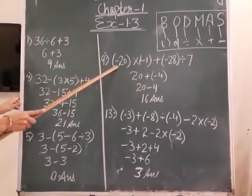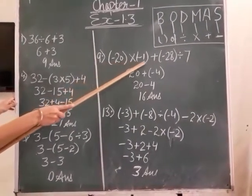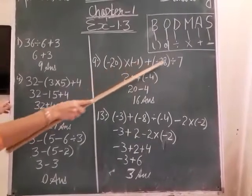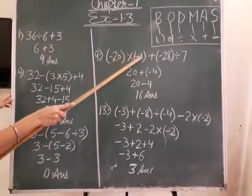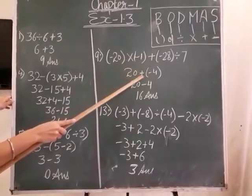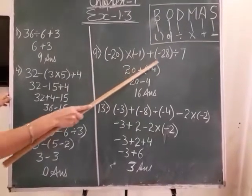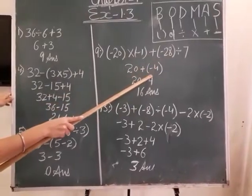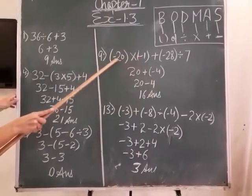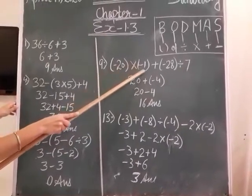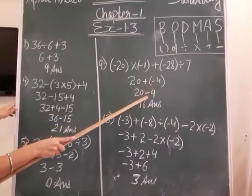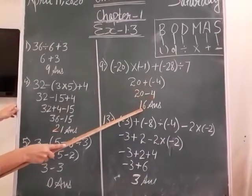Next is sum number 9: minus 20 multiply minus 1, plus minus 28 divided by 7. Here there are only two operations — division and multiplication — and both can be done in a single step. Minus 28 divided by 7 gives minus 4. And minus 20 multiply minus 1: two negatives give positive, so the result is positive 20. Then 20 plus minus 4 converts to 20 minus 4, giving the answer 16.